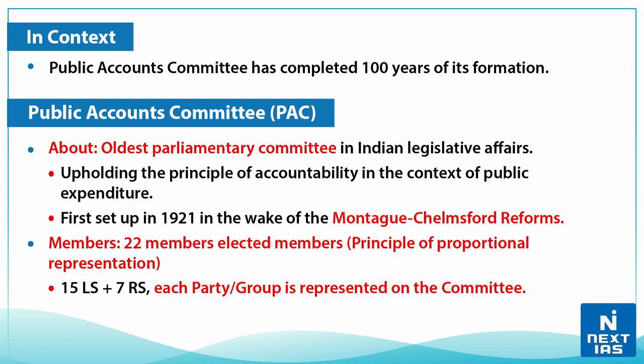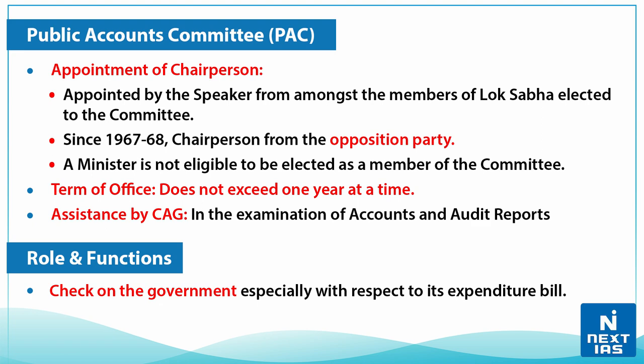With a term duration of one year only, the appointment of chairperson is done by the Speaker from amongst the members of Lok Sabha who are elected to the committee. Since 1967, the chairperson is elected from the opposition party. Any minister is not eligible to be elected as a member of the committee. This committee is also assisted by the Comptroller and Auditor General for examining the accounts and audit reports.